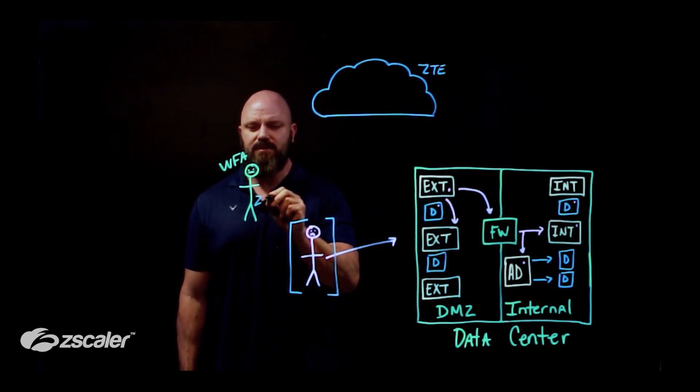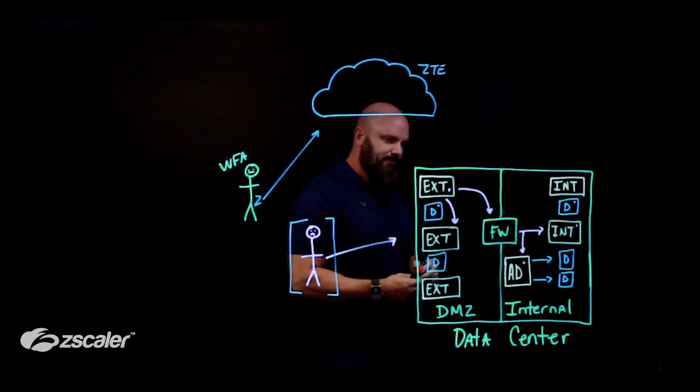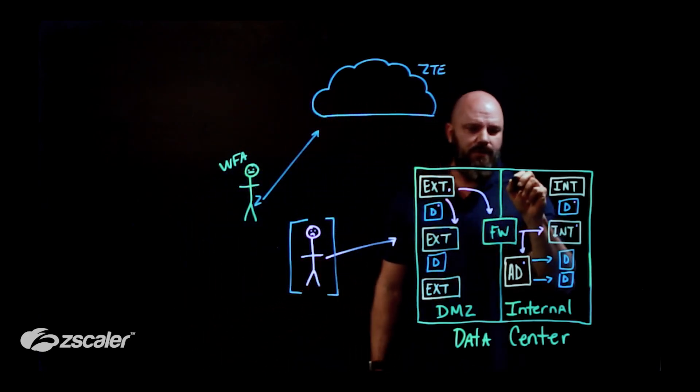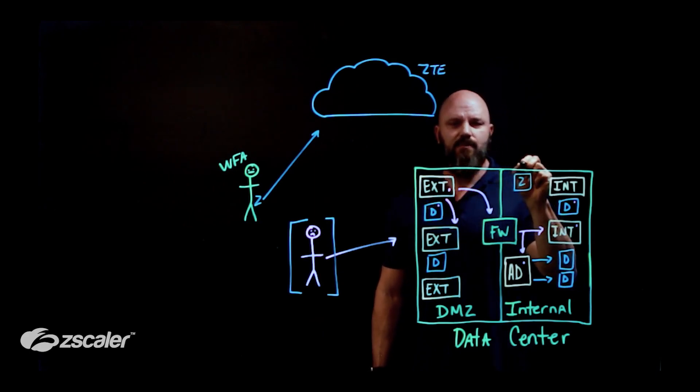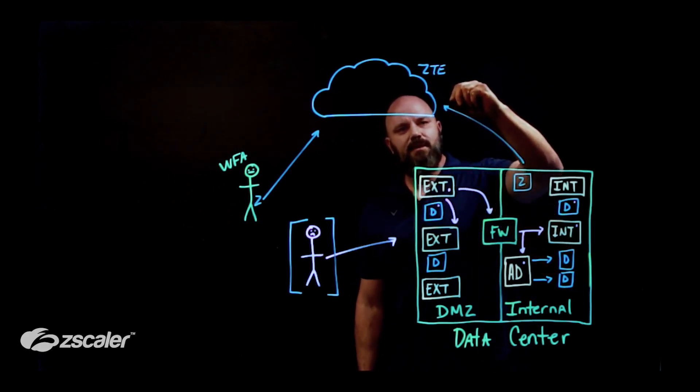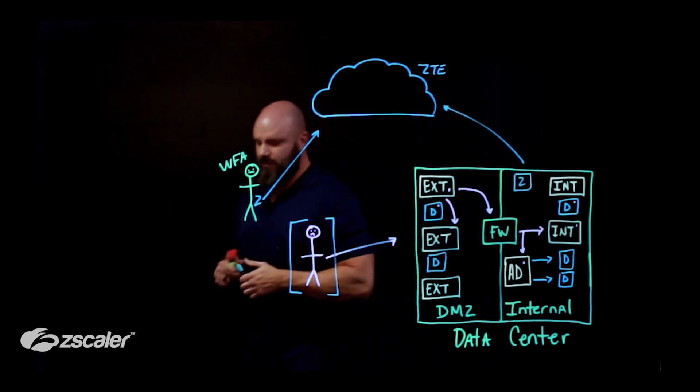We have the big bad zero trust exchange right here. This Edward Snowden character, they have Zscaler client connector. That traffic is going up to the zero trust exchange. We broker connectivity the same way as we always do. A little Zscaler VM over here. It reaches outbound, has a little connection baby based off the identity of the user. Let them come in.